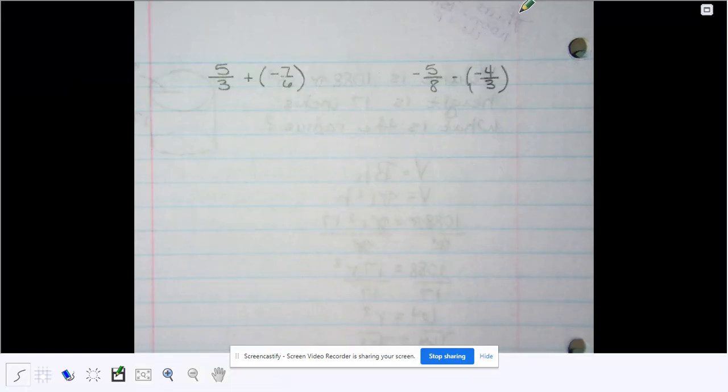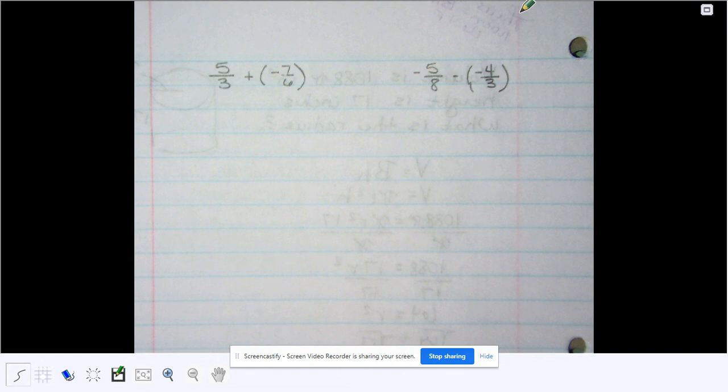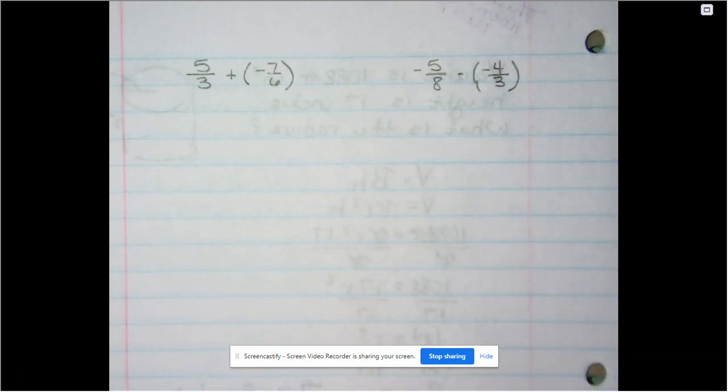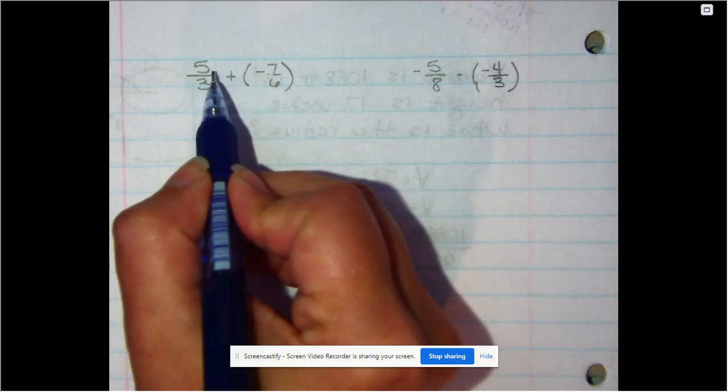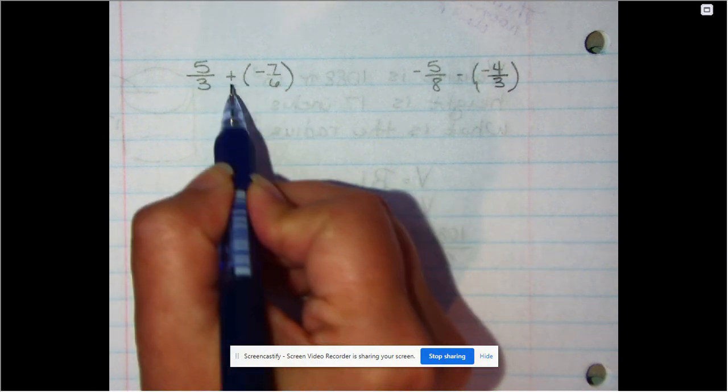Here is an example of solving some fraction problems with positive and negative numbers. So in this first problem we have two fractions. They have opposite signs.